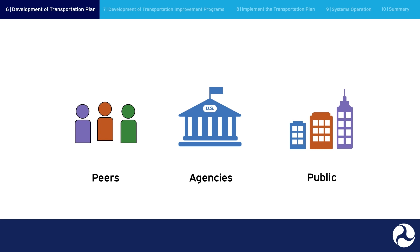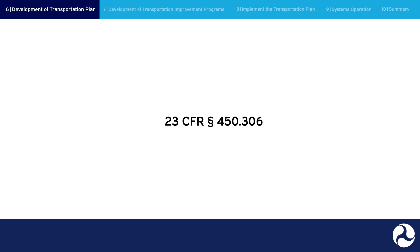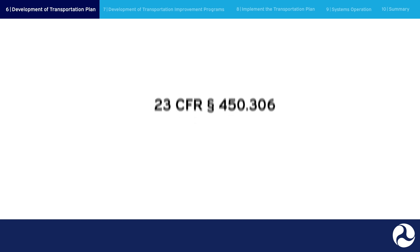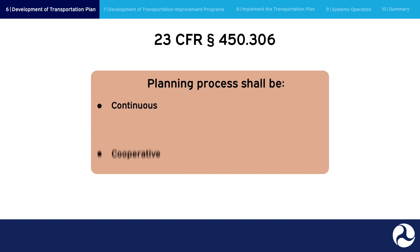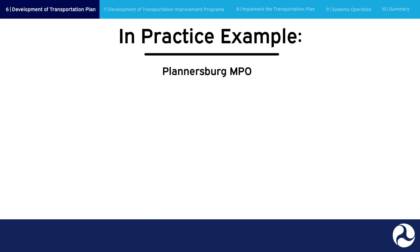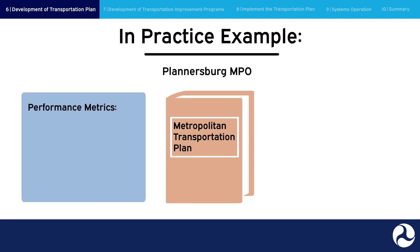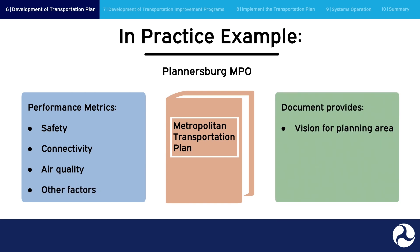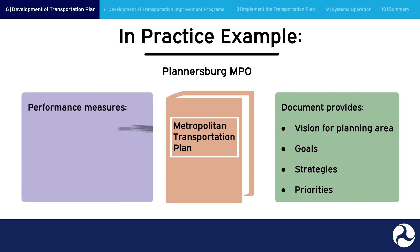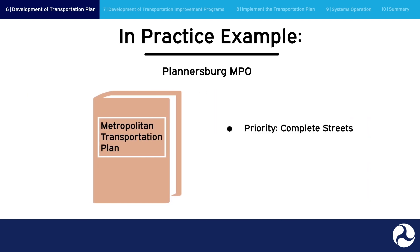As you develop the plan, make sure it aligns with the established transportation factors found in 23 CFR Section 450.306, which dictate that the planning process shall be continuous, cooperative, and comprehensive. In practice example: Plannersburg develops a comprehensive MTP, incorporating performance metrics intended to measure safety, connectivity, and air quality, among other factors. This document provides a long-range vision for the planning area and lays out the vision, goals, strategies, and priorities. It also defines performance measures, as well as project, program, and policy recommendations. Within the plan, complete street strategies are prioritized, and bike lanes are highlighted as a project recommendation. General information, including potential location and broad design guidance, is included.